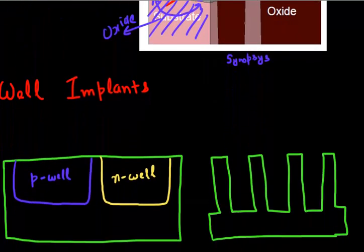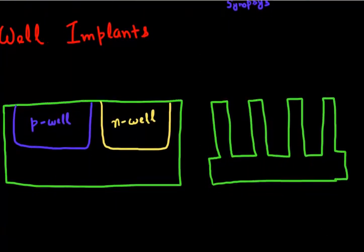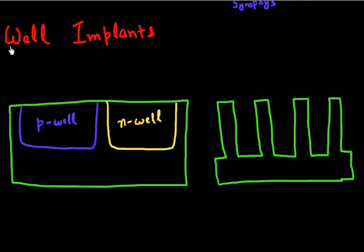I described to you earlier when we talked about the process flow for front-end of the line that we used these well implants to isolate or to define the regions where we'll be making our PMOS and NMOS devices. We defined this P-well region and these N-well regions to define the regions where we make PMOS and NMOS. So the question is, how do I do that in a FinFET device?